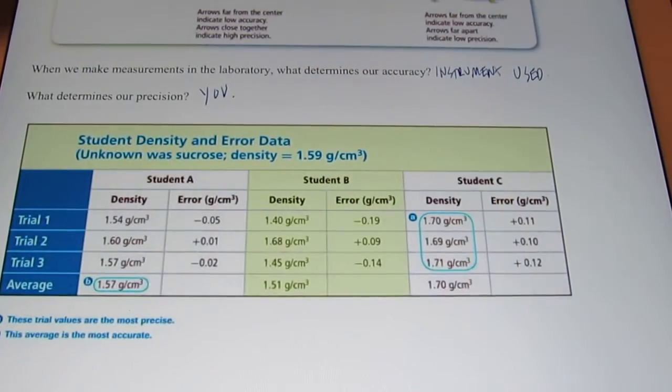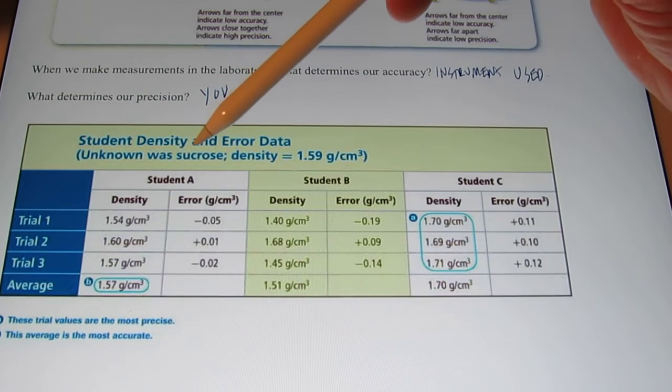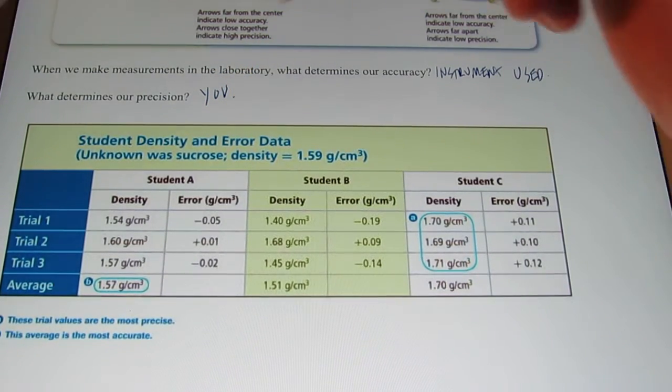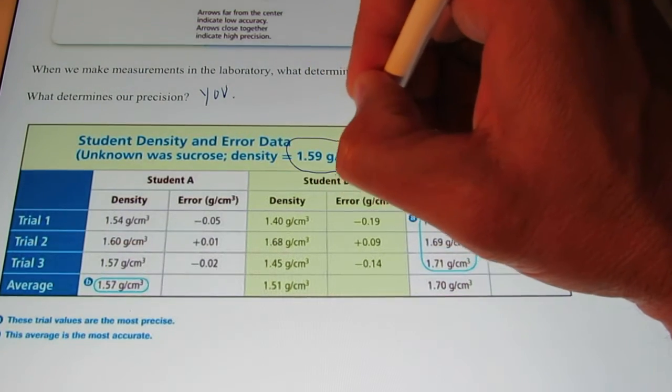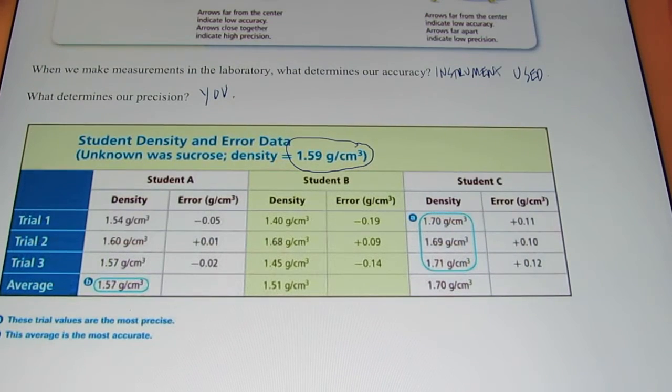Now, let's take a look at three students. They performed an experiment to find the density of sucrose table sugar. Now, it turns out the accepted value for the density of sucrose is 1.59 grams per cubic centimeter.